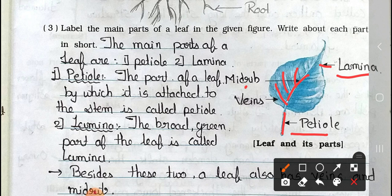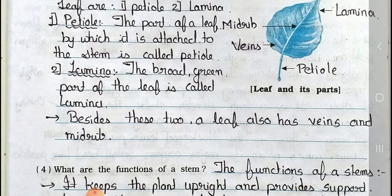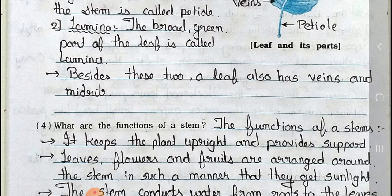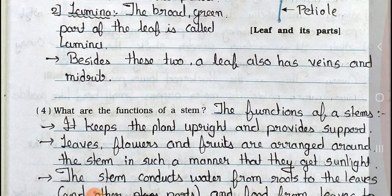Petiole: the part of a leaf by which it is attached to the stem is called the petiole. Lamina: the broad green part of the leaf is called the lamina. Besides these two, a leaf also has veins and a midrib.